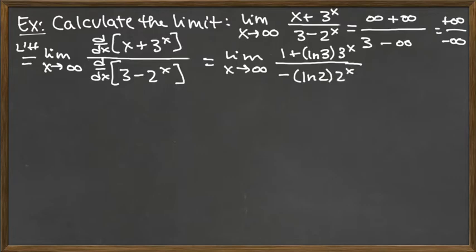After one application of L'Hopital's rule, we've made a bit of progress because our original function was a ratio involving polynomial terms as well as exponential terms. Any time we're taking derivatives of polynomial terms, we're just dropping powers and eventually eliminating all those polynomial terms. So really the exponential terms are the ones that are dominating.